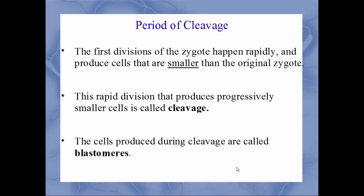We'll begin with the period of cleavage. Once you have the egg fertilized and you have the zygote, the very first few days the very first divisions happen very, very quickly. But you're producing daughter cells that are actually smaller than the original zygote, because that fallopian tube isn't all that big — you can't have that zygote getting larger or it would rupture the fallopian tube. That very rapid division producing smaller cells is what's called cleavage, and the cells produced in this period are called blastomeres.